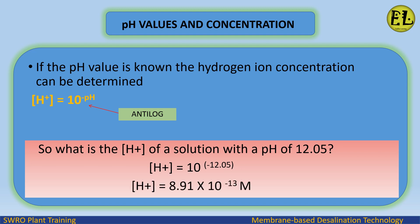pH values and concentration: if the pH value is known, the hydrogen ion concentration can be determined using [H⁺] = 10^(−pH). For example, what is [H⁺] of a solution with a pH of 12.05? [H⁺] = 10^(−12.05) = 8.91 × 10⁻¹³ mol/L.